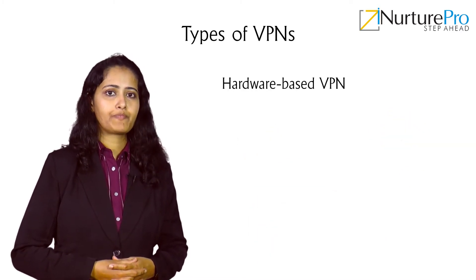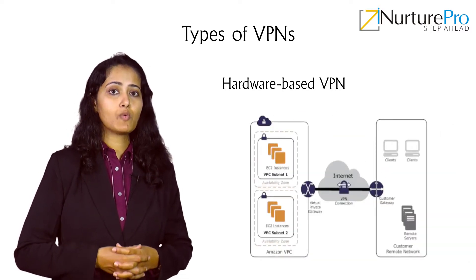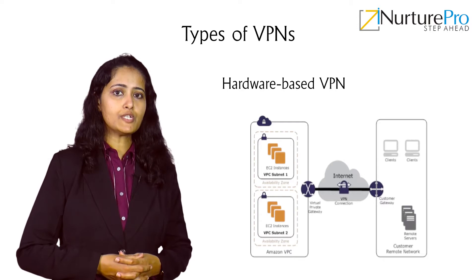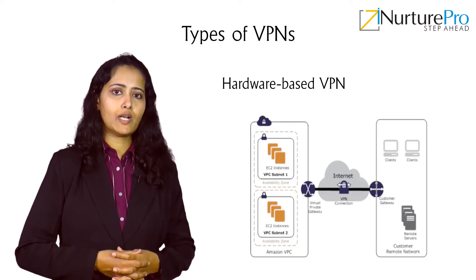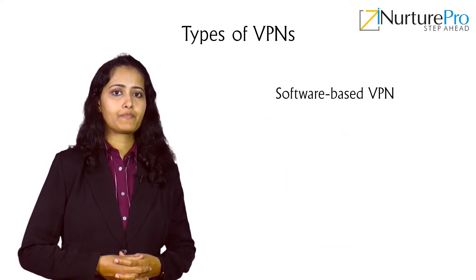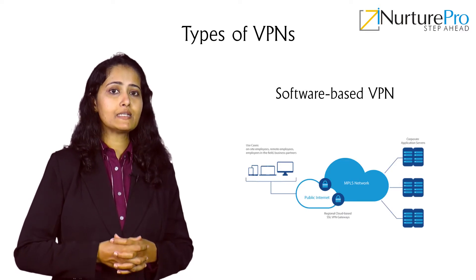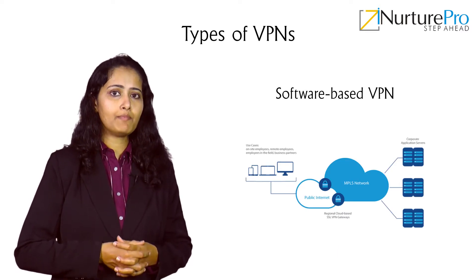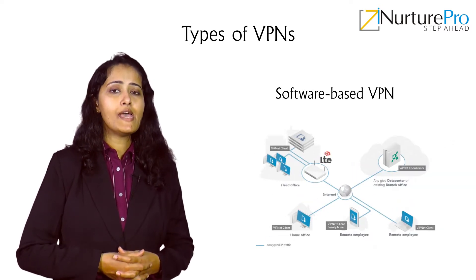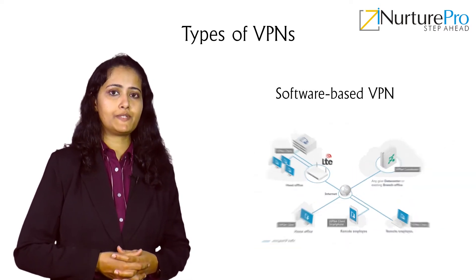Hardware-based VPN is a more expensive type of VPN but it provides better performance, higher network output, and is more reliable. Software-based VPN is the most flexible type of VPN and is typically used when VPN endpoints are not controlled by the same party and when the firewalls and routers are of different types.